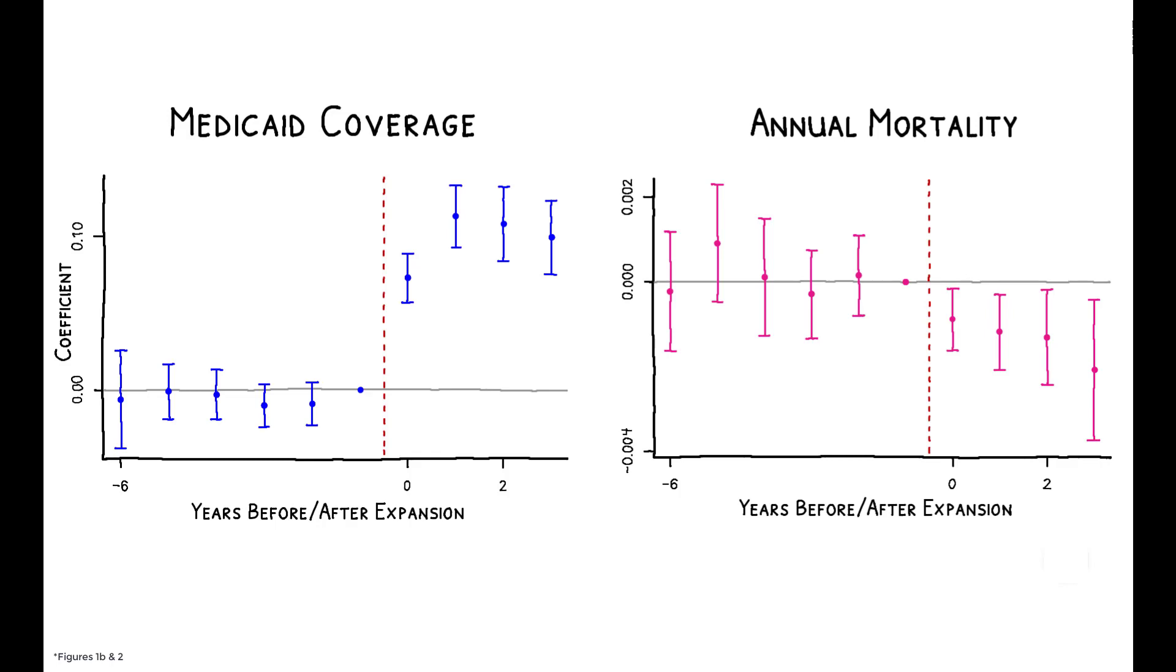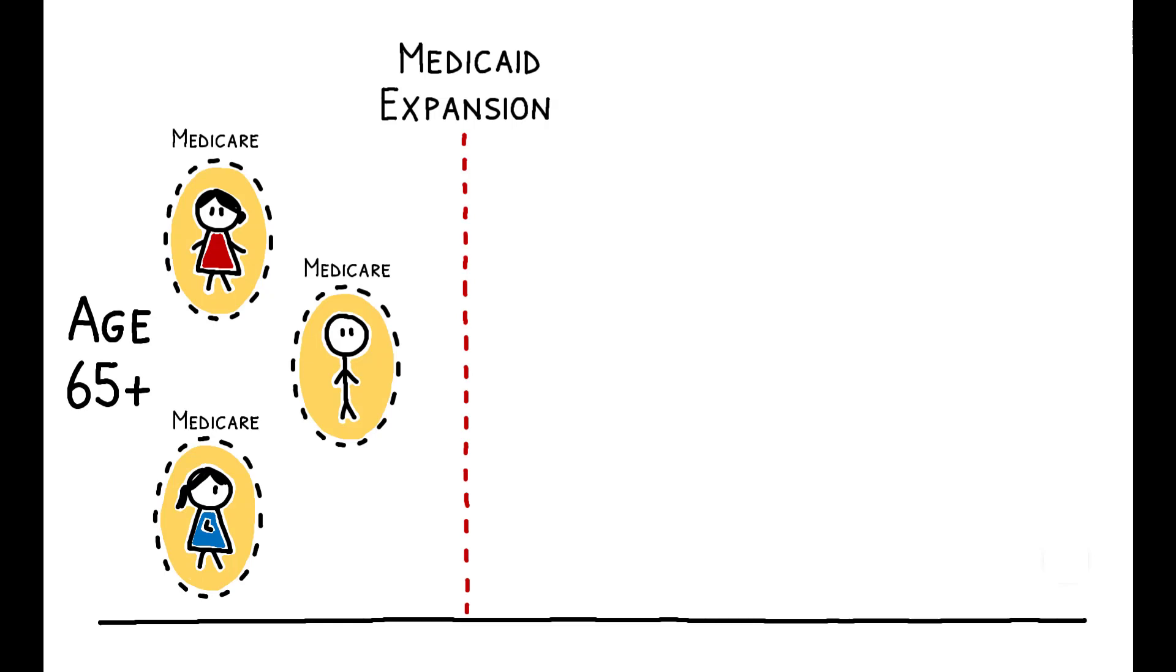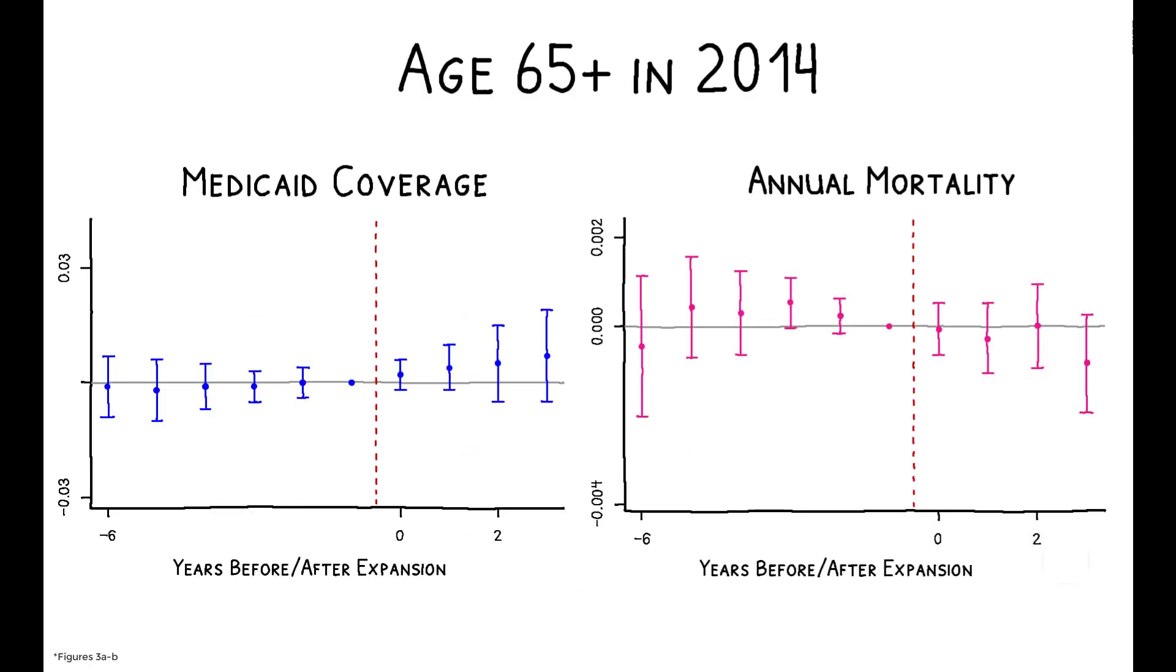These results are fairly striking, and to provide reassurance that they are, in fact, driven by the Medicaid expansion, the authors show that we don't see similar effects for individuals who were largely unaffected by the reform. In particular, individuals who were aged 65 or older at the time of the ACA expansions already had health coverage through the Medicare program, and therefore should not have been affected by the ACA expansion. And indeed, there is no effect on either Medicaid coverage or mortality for this group.